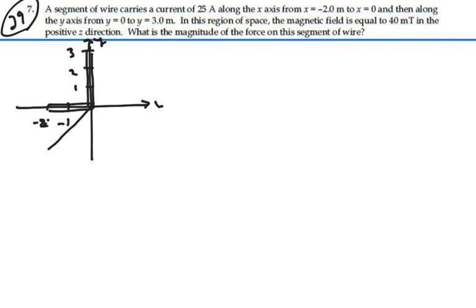And then we have a magnetic field directed in the z direction, and the magnitude of that field is 40 millitesla. Well, we do know the angle between our current direction and our field, but let's try this using vectors. We should have that the force is equal to the current times our length vector crossed with our magnetic field.